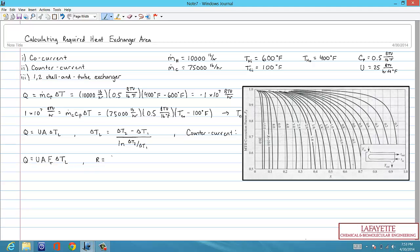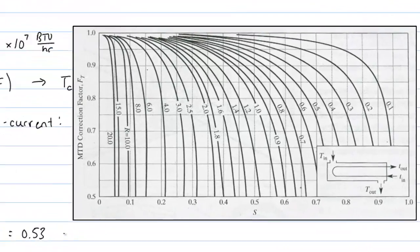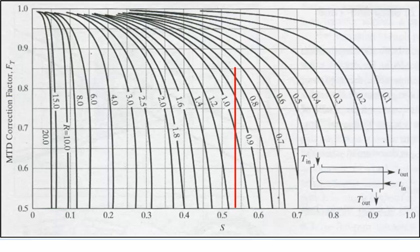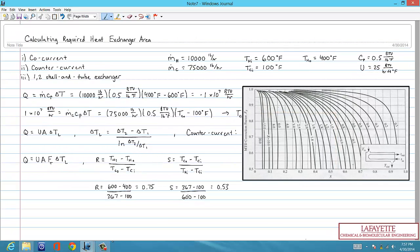R and S are functions of the inlet and outlet temperatures of each stream. Plugging in our temperatures results in an R value of 0.75 and an S value of 0.53. From the chart, for S = 0.53 and R = 0.75, F_T is approximately 0.86. Applying the correction factor and solving for A results in a required area of 1761 square feet.